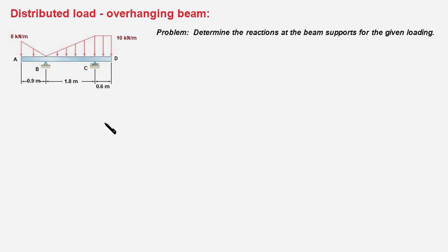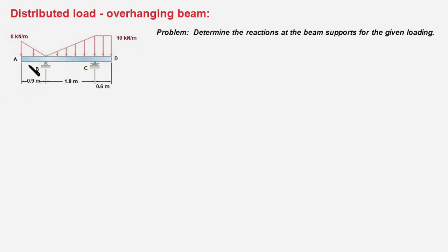What is the difference between concentrated load and distributed load? When load acts at a point of a body it is called concentrated load, but when it acts on the entire surface of a body then it is called distributed load. For example, here the load is acting on the entire area of the beam and therefore it is called distributed load.